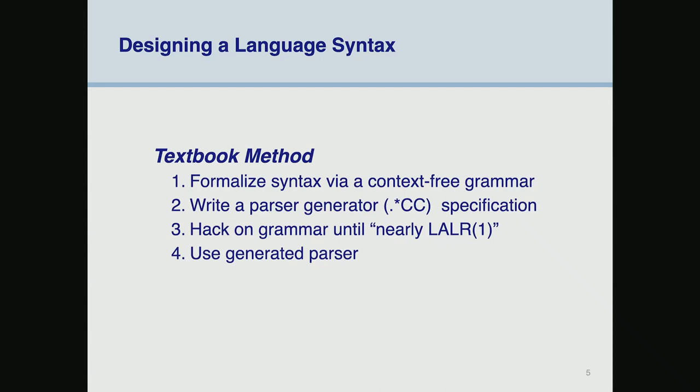When you design a language you typically want to formalize the syntax with a context-free grammar, as Timo did for SPL. You then feed that grammar through a compiler-compiler that generates table-driven LR parsers — bottom-up parsers — and then you have to hack on the grammar until you get it right. For parsers to be efficient, they want to be able to look ahead just one symbol. Usually you want to avoid backtracking for efficiency, so you try to get a nice grammar, like the one for SPL.